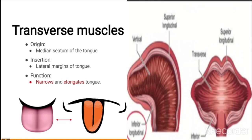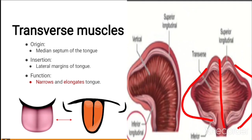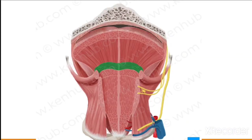The transverse muscle originates from the median septum of the tongue and inserts on the lateral margins of the tongue. Its function is to narrow and elongate the tongue.